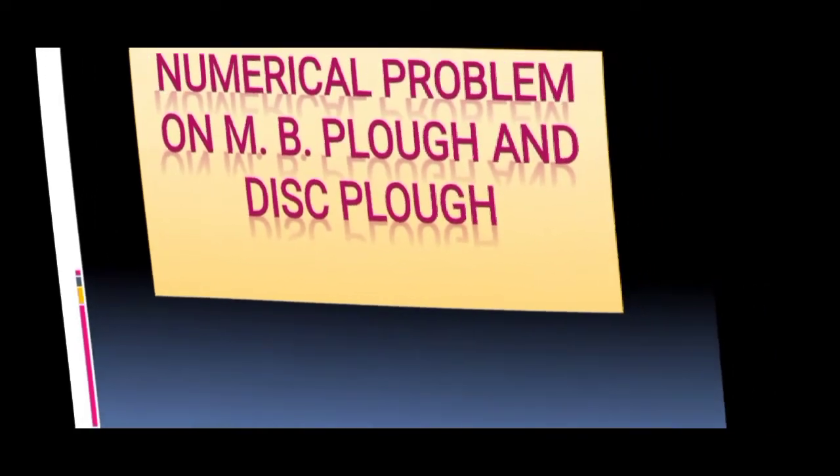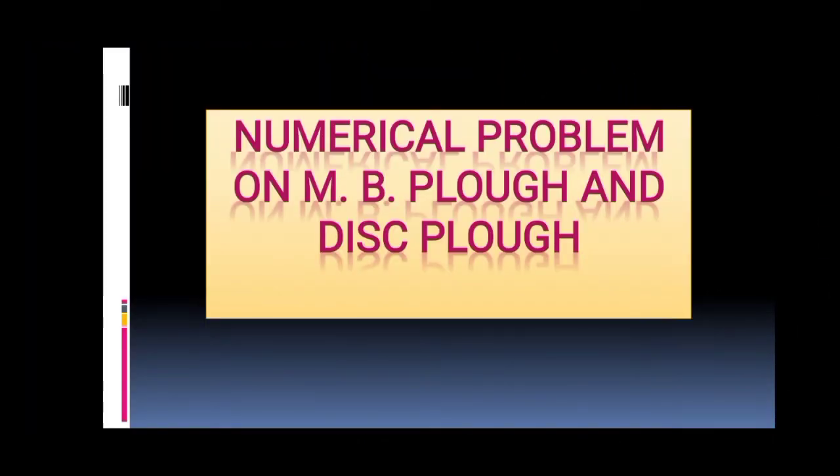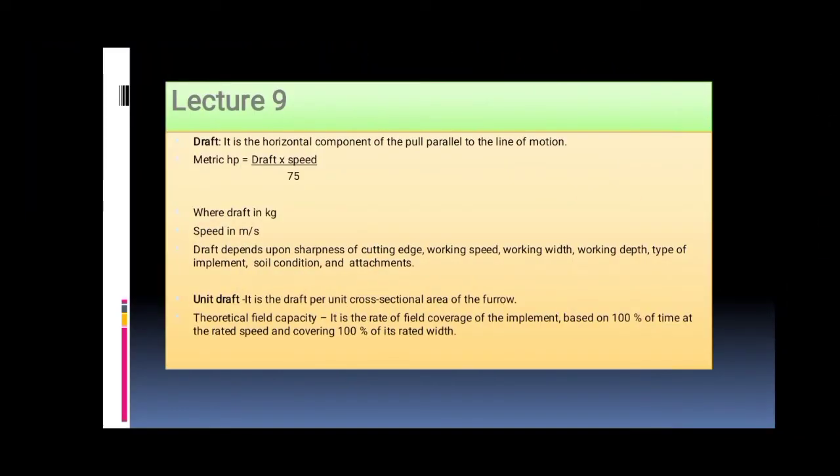Numerical Problem on MD Plaw and D's Plaw, Lecture 9. Draft is the horizontal component of the pull parallel to the line of motion. Metric HP equals draft times speed divided by 75.